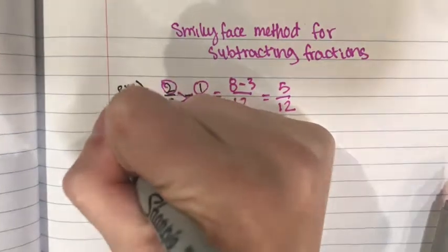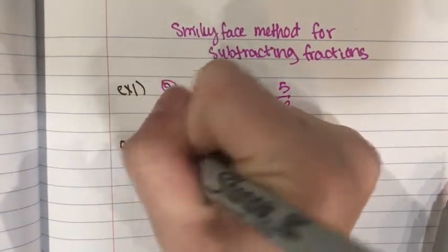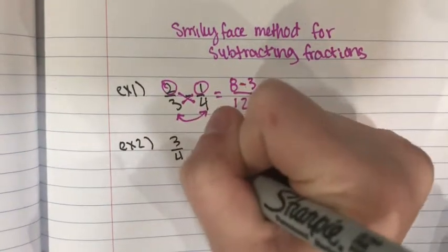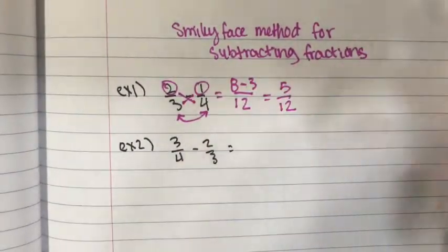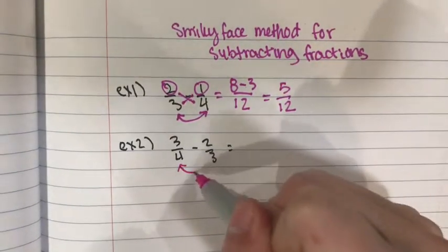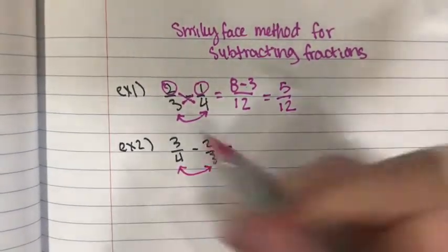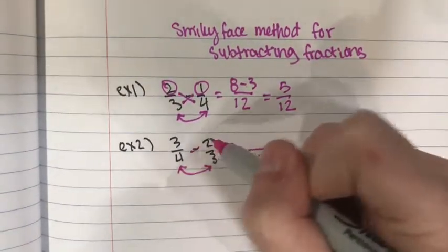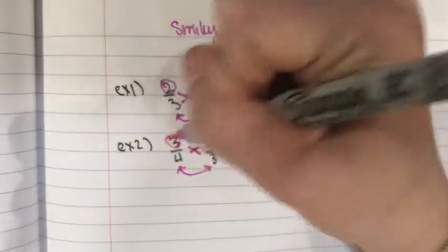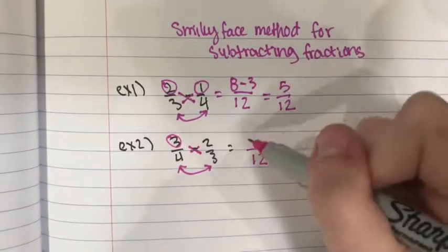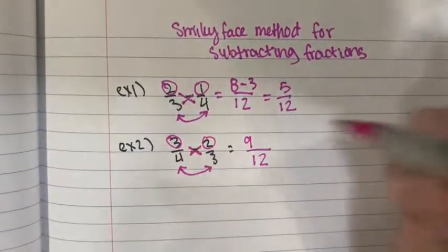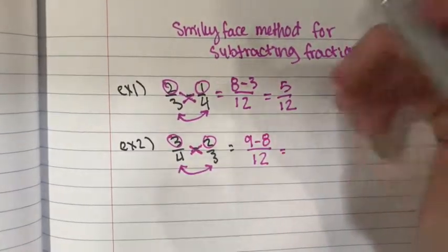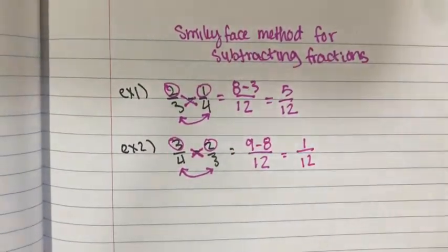The next example is 3/4 minus 2/3. First, draw the mouth of the smiley face, which is 4 times 3, and that's 12. Then you draw the eye. So 3 times 3 is 9, and the other way, 4 times 2 is 8, and you're subtracting. So 9 minus 8 is 1, bring over 12, giving you 1/12.